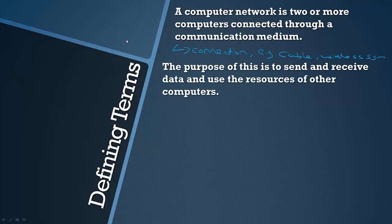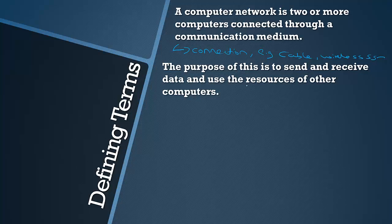The purpose of networks is to send and receive data between computers, and it allows computers to use resources connected in other places. A resource in this context is purely just another device other than a standard computer — for example, a printer — so usually peripheral devices that can be used over the network.